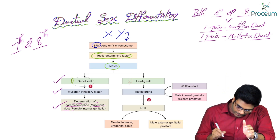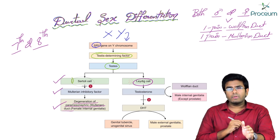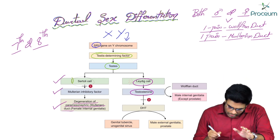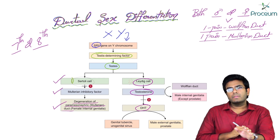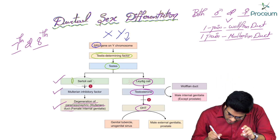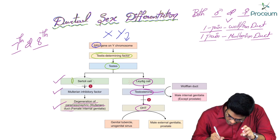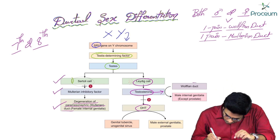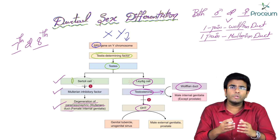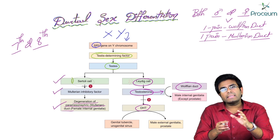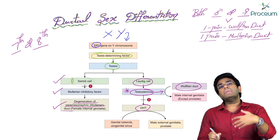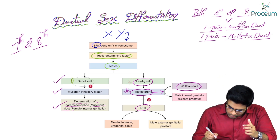When the paramesonephric duct or Mullerian duct is inhibited, its derivatives — like uterus, fallopian tubes, cervix, and upper part of vagina — are not developed in a male embryo. Now, Leydig cells inside the testis will produce testosterone, which is converted into dihydrotestosterone. Testosterone helps in the expression of the Wolffian duct.